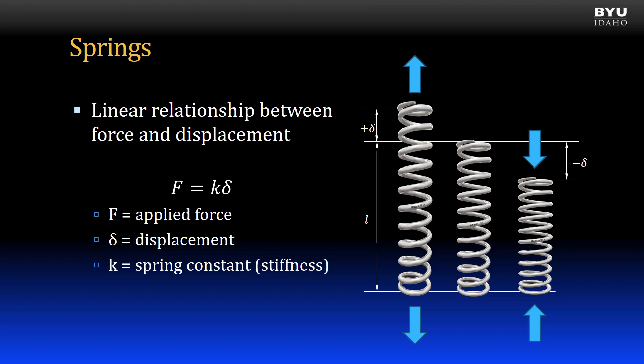When using the spring equation, we typically have one unknown variable. If we know the applied force and the spring constant, we can solve for the displacement. If we know the displacement and the spring constant, we can solve for the applied force. In a design scenario, we may know the force and have a maximum limit on displacement. Then we can solve for the spring constant required.